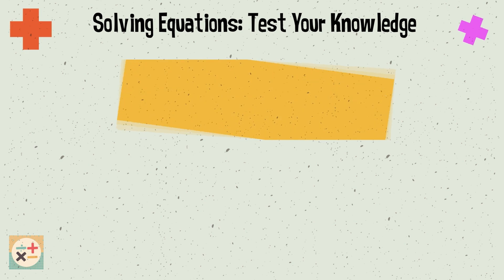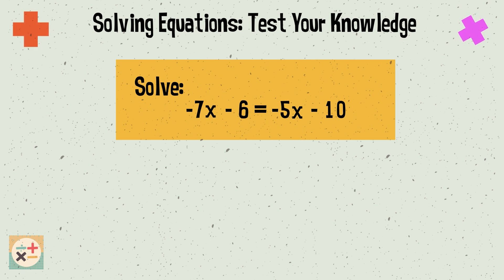Question 3. Solve the following: minus 7x minus 6 equals minus 5x minus 10. x equals 2.